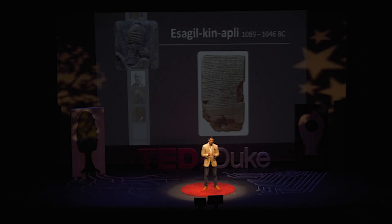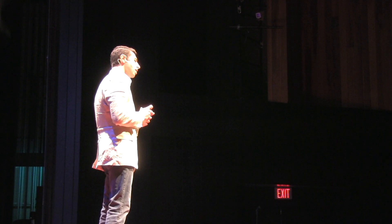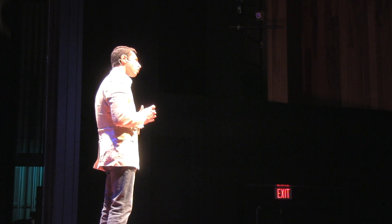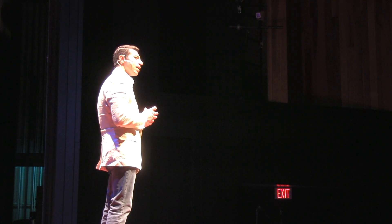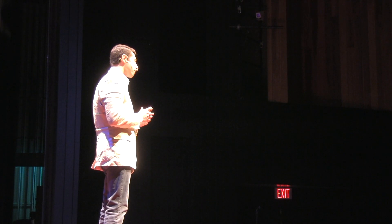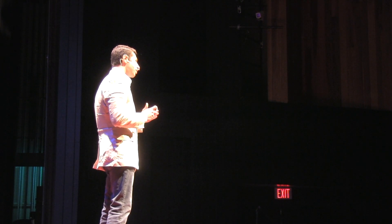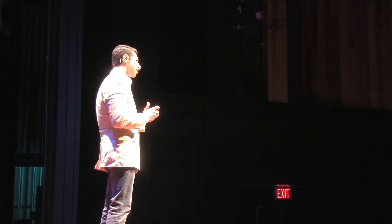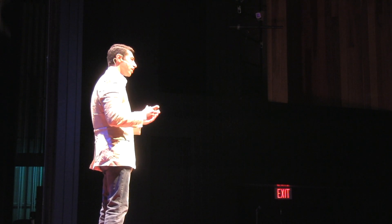3,000 years ago in ancient Babylonia, the chief scholar and physician Issa Gilkin Apley tried to understand the diagnostics of the body by authoring his own book, which he called the Diagnostic Handbook. He tried to understand the human body through developing his own algorithm of inspection, introducing more than 3,000 entries to systematically examine the human body from head to toe to diagnose diseases.